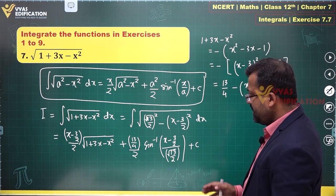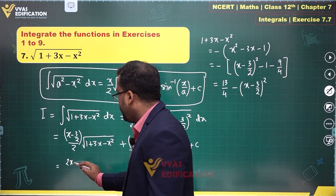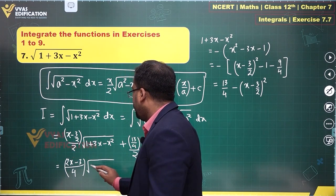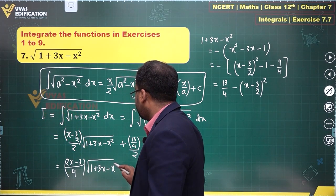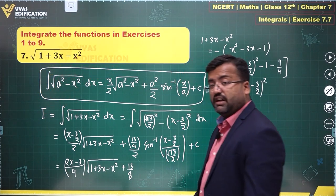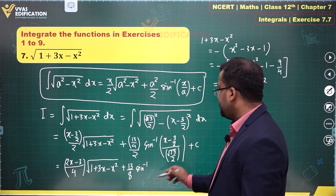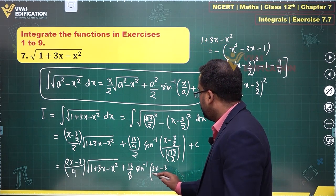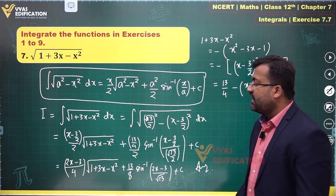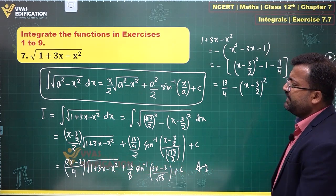Now simplifying: taking the LCM, the first term becomes (2x - 3)/4 · √(1 + 3x - x²), and the second term becomes 13/8 · sin⁻¹[(2x - 3)/√13] plus constant of integration. That is the required answer for this seventh question.